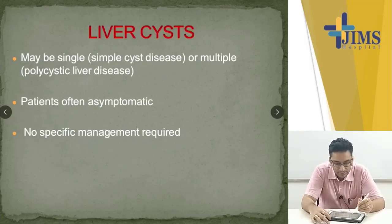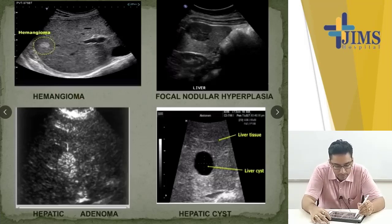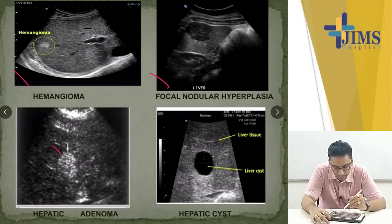Liver cysts can be single or multiple. Often asymptomatic and no specific management is required. These are the USG appearances: this is a hemangioma, this is focal nodular hyperplasia, this is a hepatic adenoma, and this is a hepatic cyst.